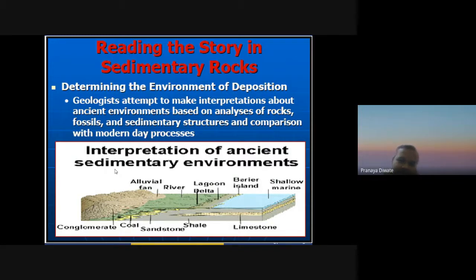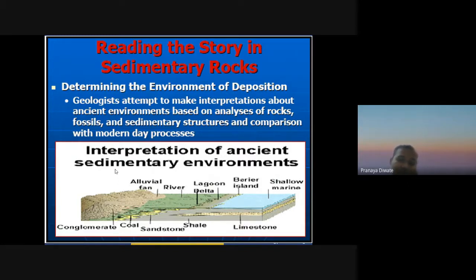The concept of reading the story in sedimentary rock is that a specific sequence — like graded bedding, fining upward, or coarsening upward — tells you the environment of deposition. For example, a delta always shows a fining or coarsening upward sequence. Cross bedding indicates a change in direction of flow. When visiting the field, you will not always get ideal sequences, so you must apply your knowledge to anomalous rocks and conditions.